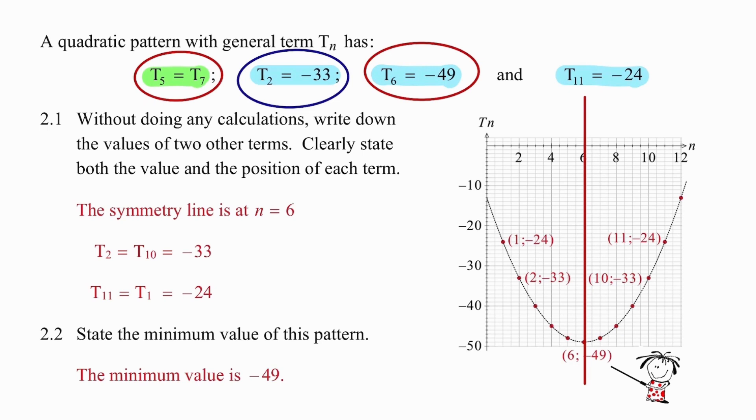If I think about my second term value and think about the fact that that lies four positions to the left of the symmetry line, I can get an equal value if I move four positions to the right of the symmetry line. So t2 will equal t10 which is equal to minus 33. In the same way I can focus on t11 and work out that t11 lies five units to the right of the symmetry line. So I can look for an equal value five units to the left of the symmetry line at t1. So I can again be confident that t11 is equal to t1 is equal to minus 24.